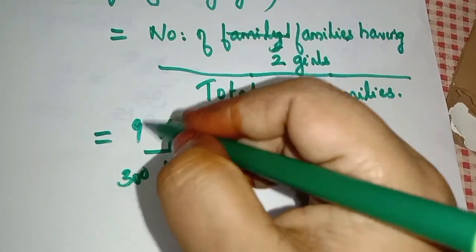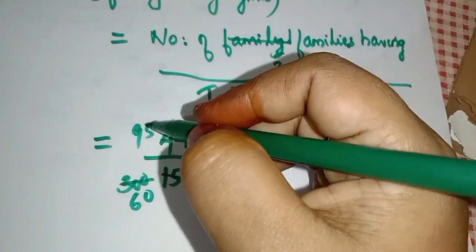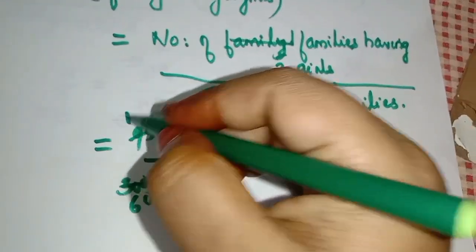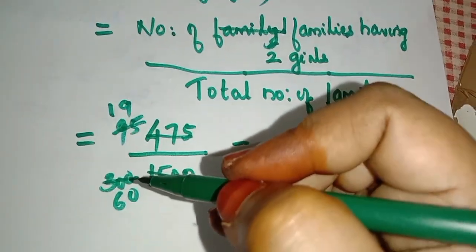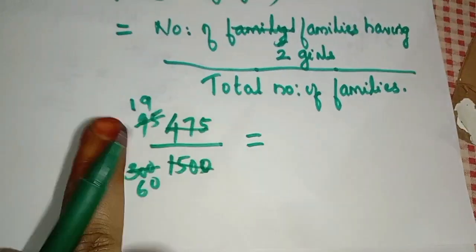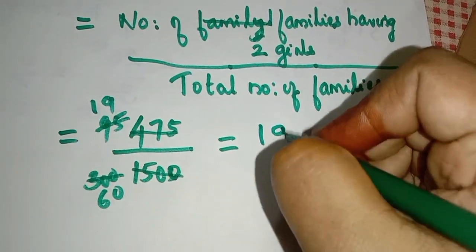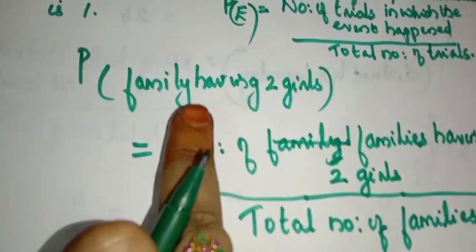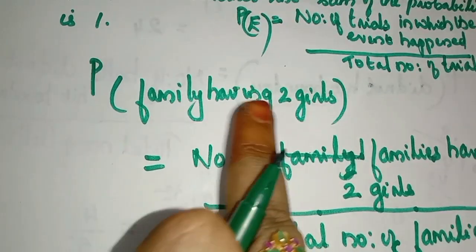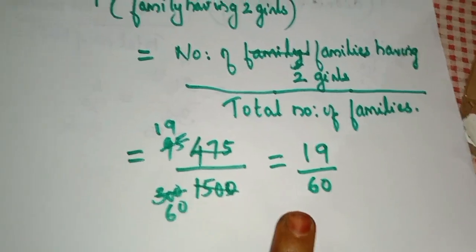475 divided by 1,500, reducing this fraction: 19 divided by 60. So the probability of two girls is 19/60.